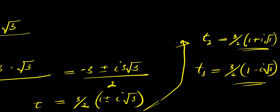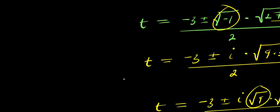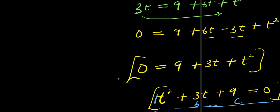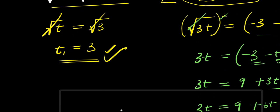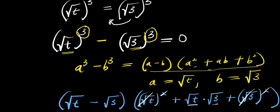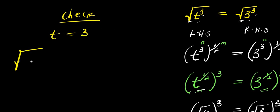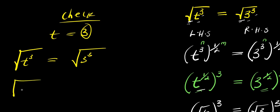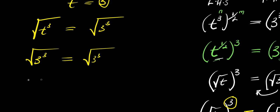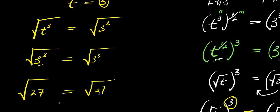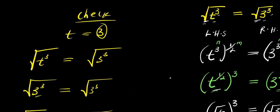So these are the two complex solutions. We also have one real solution. To verify: if t equals 3, then square root of t³ equals square root of 3³. Square root of 27 equals square root of 27 — correct. So the solutions are confirmed. Thank you and goodbye.